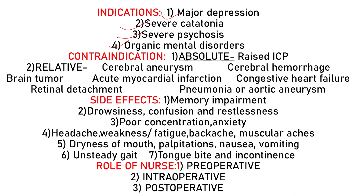Contraindications — where we do not give ECT — include raised intracranial pressure (ICP). We also do not give ECT in cases of cerebral aneurysm, cerebral hemorrhage, brain tumor, acute myocardial infarction, congestive heart failure, retinal detachment, pneumonia, and aortic aneurysm. Majority of these contraindications relate to cardiac and brain conditions.